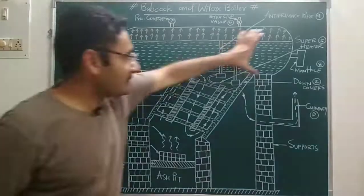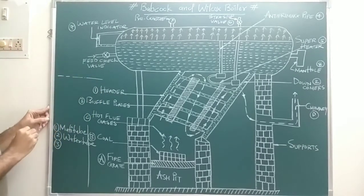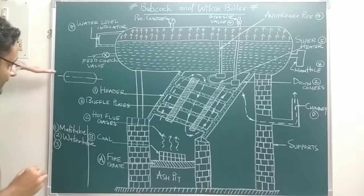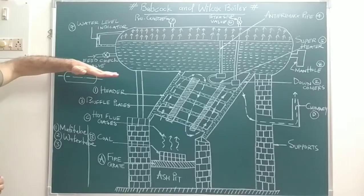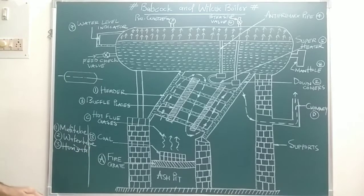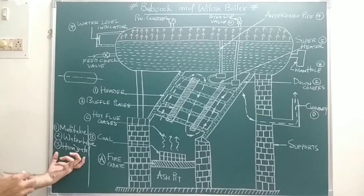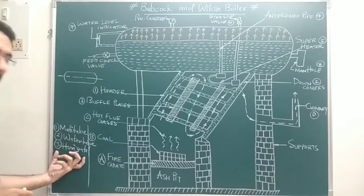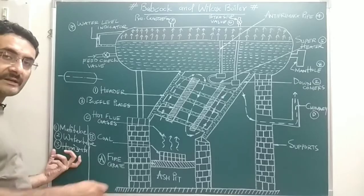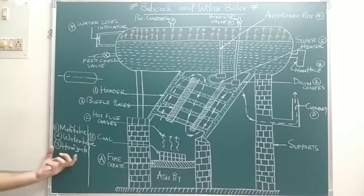The third point: the shell of the boiler has a horizontal axis, so this boiler is also known as a horizontal axis boiler. In my previous video on the Cochran boiler, I mistakenly wrote 'horizontal axis boiler' — it is actually a vertical axis boiler. I've added a note below that video to correct this.